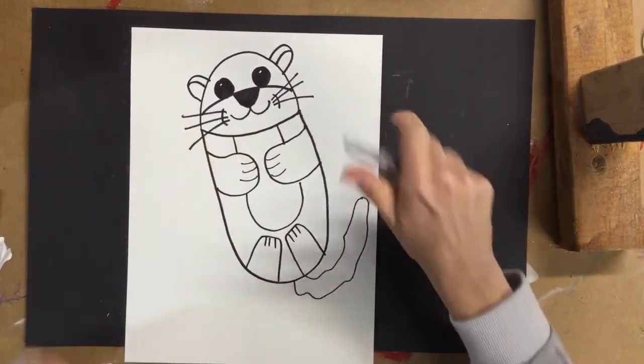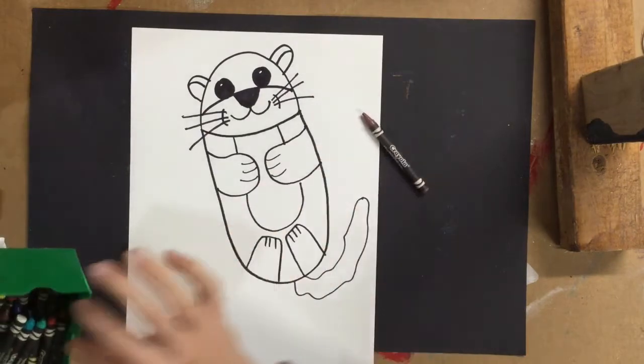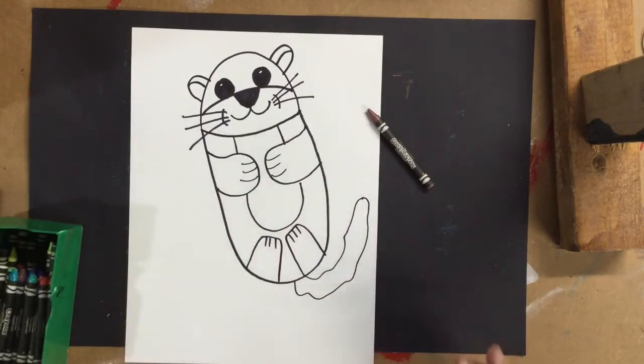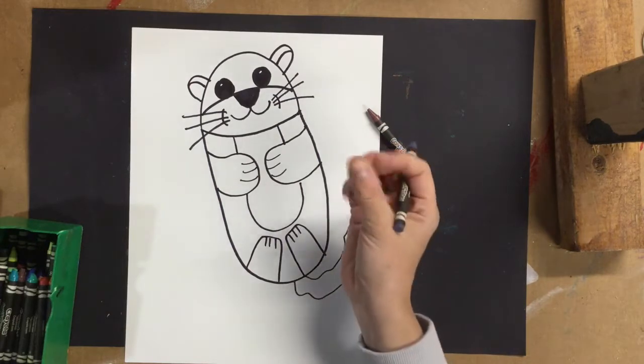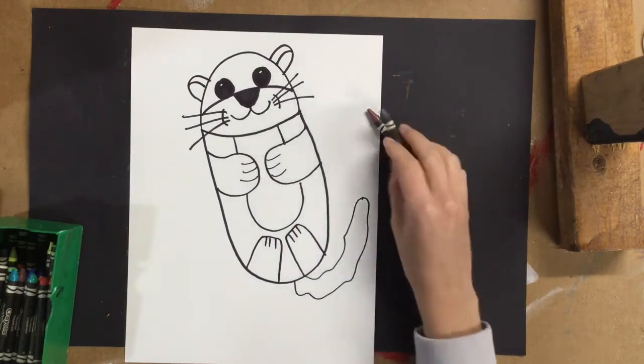So, let's color. Let's find some brown crayons because now we're going to talk about adding texture, right? On the lesson plan, it talks about how otters have fur. And fur is something that you can feel, so it has a texture.